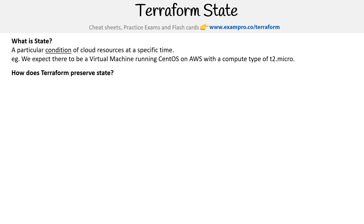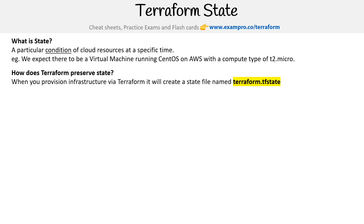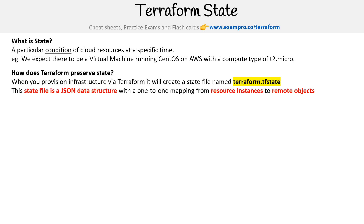So how does Terraform preserve state? When you provision infrastructure via Terraform, it will create a state file named terraform.tfstate — it's very important to remember that name, because it literally is an exam question, the exact naming of that. This state file is a JSON data structure with a one-to-one mapping from resource instances to remote objects.